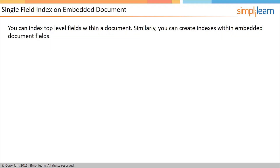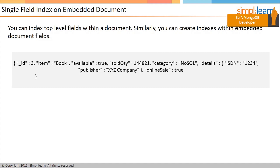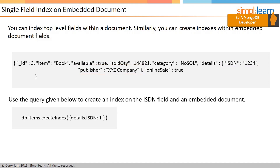You can index top-level fields within a document, and similarly, you can create indexes on embedded document fields. The document structure shown on the screen has a details field depicting an embedded document with two embedded fields: ISBN and publisher. To create an index on the ISBN field within the embedded document called details, perform the queries shown on the screen.